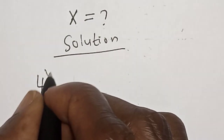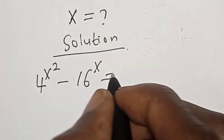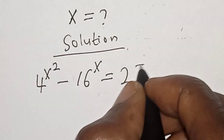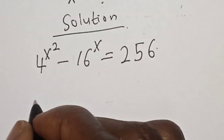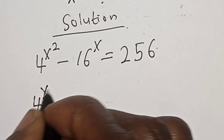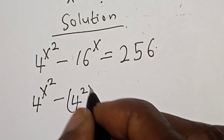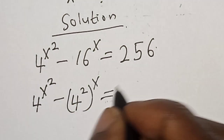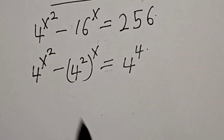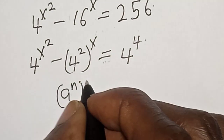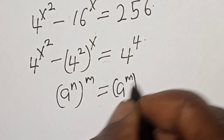4 raised to power s squared minus 16 raised to power s is equal to 256. We rewrite 16 as 4 squared, so this becomes 4 raised to power s squared minus 4 squared raised to power s is equal to 256, which is 4 raised to power 4. Now, using the rule e raised to power n raised to power m equals e raised to power m times n.